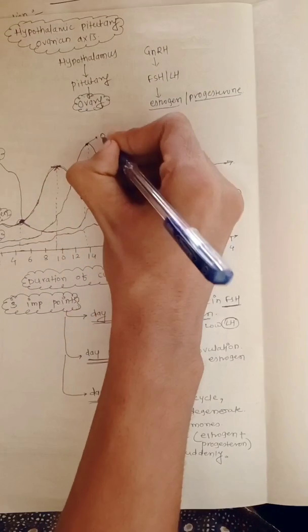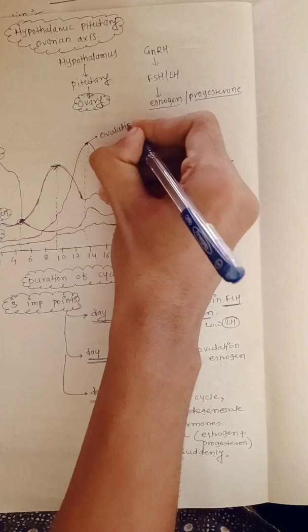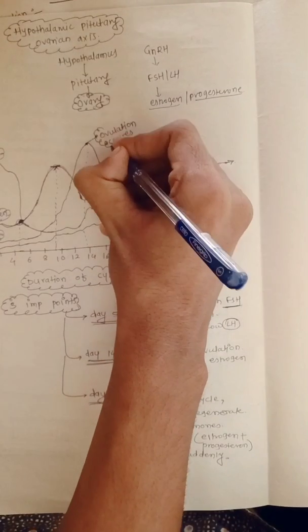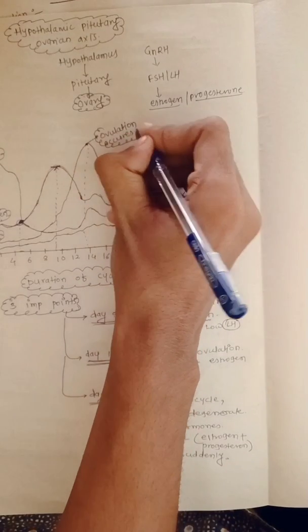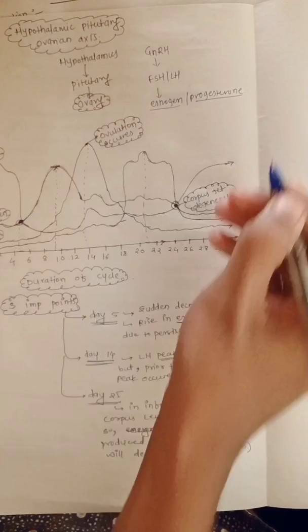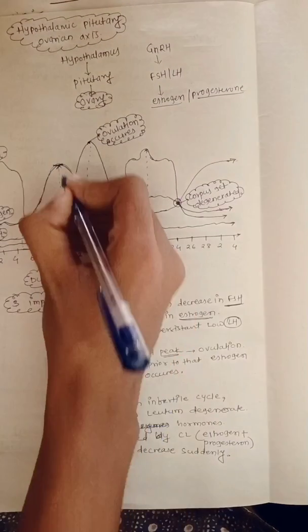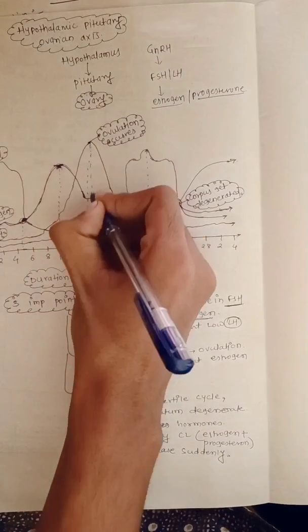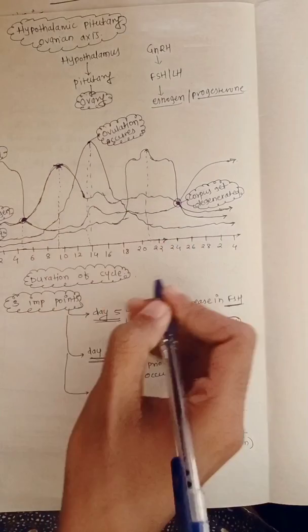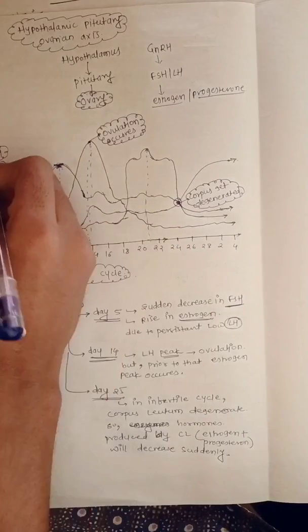On day five, due to the low level of LH, there is a rise of estrogen, and due to this rise of estrogen a negative feedback mechanism occurs, which keeps LH at a low level.